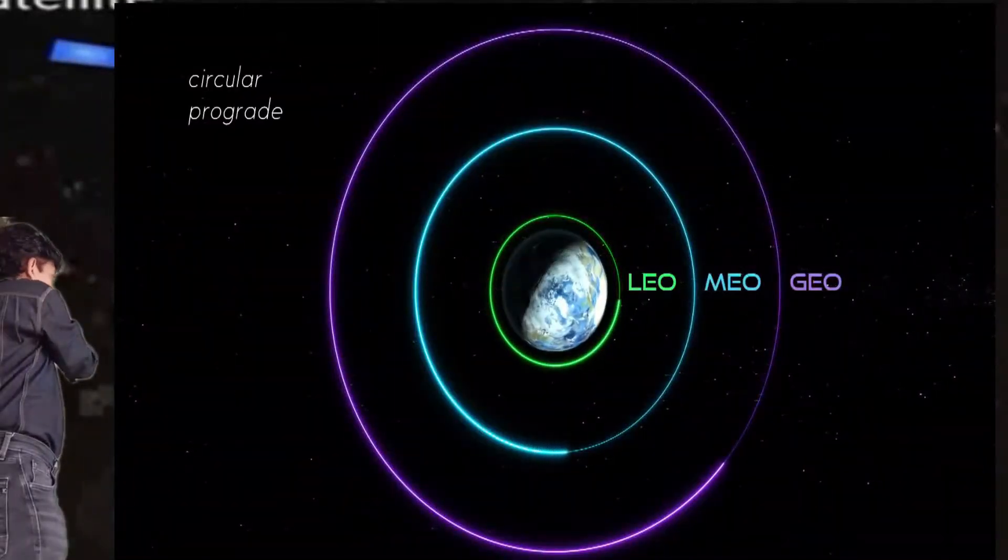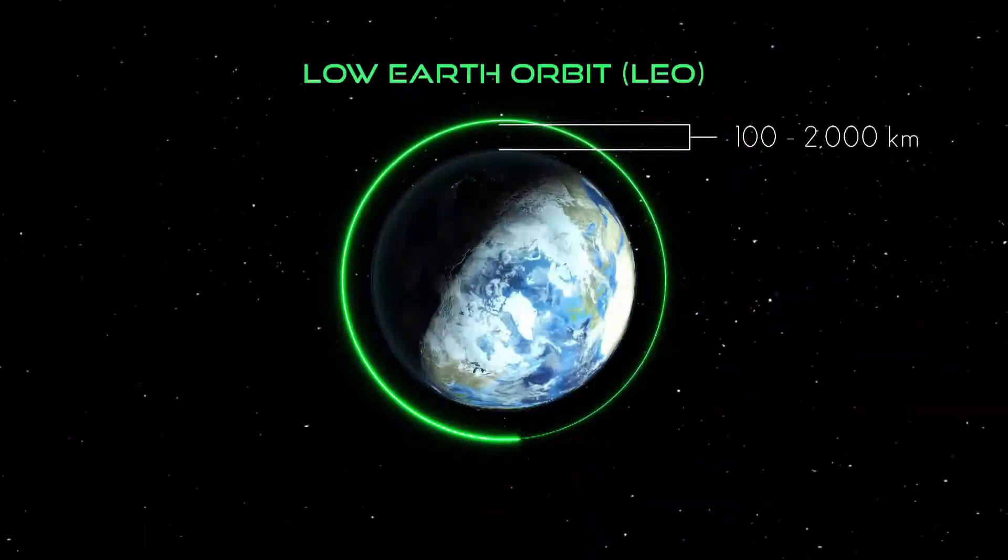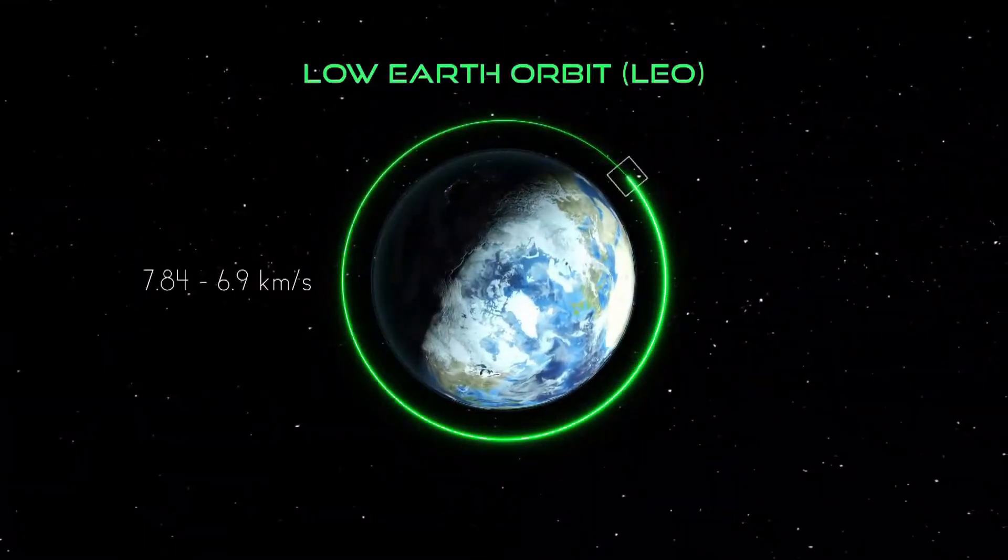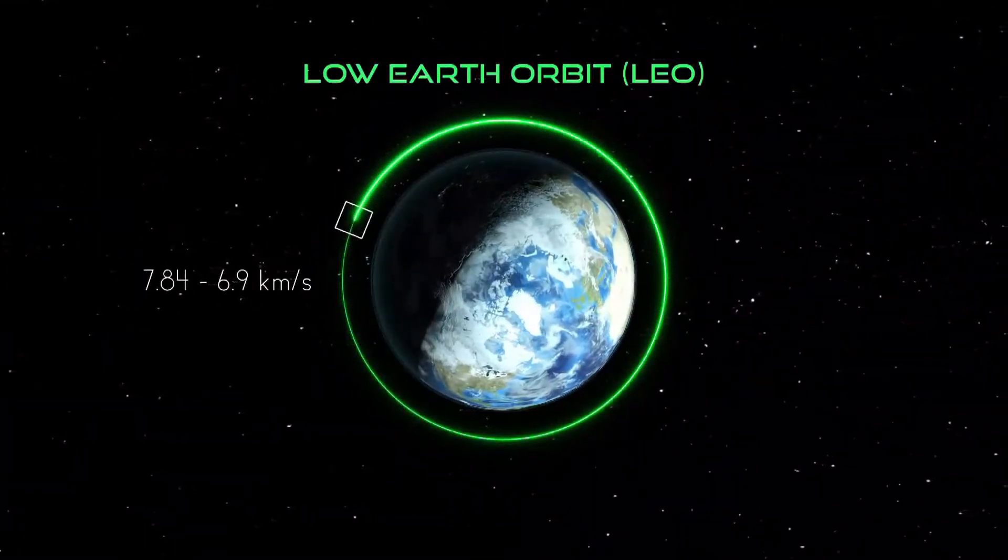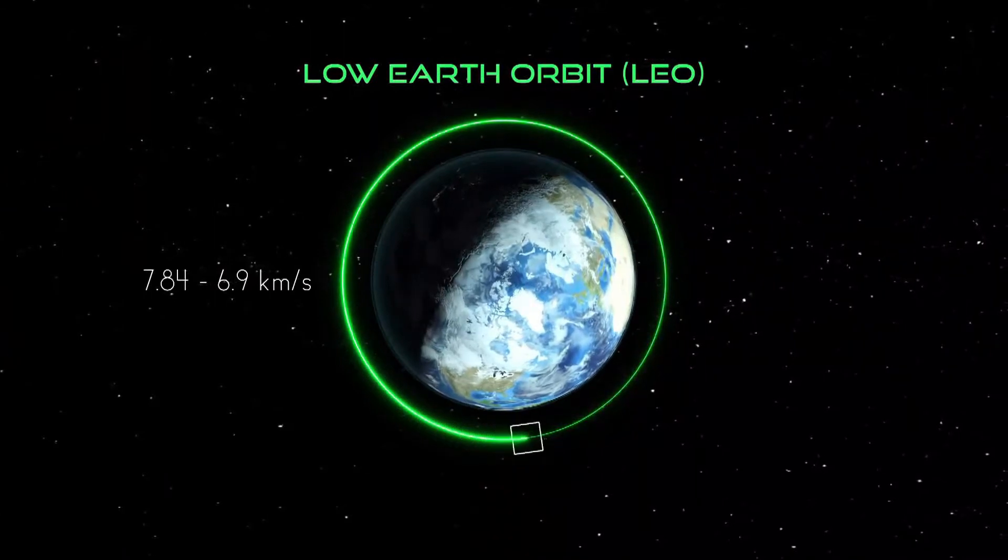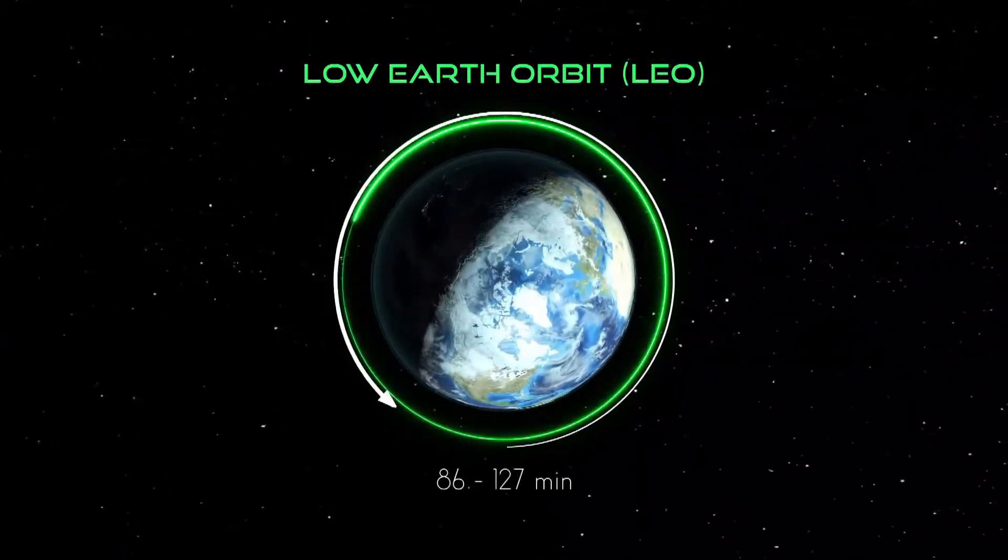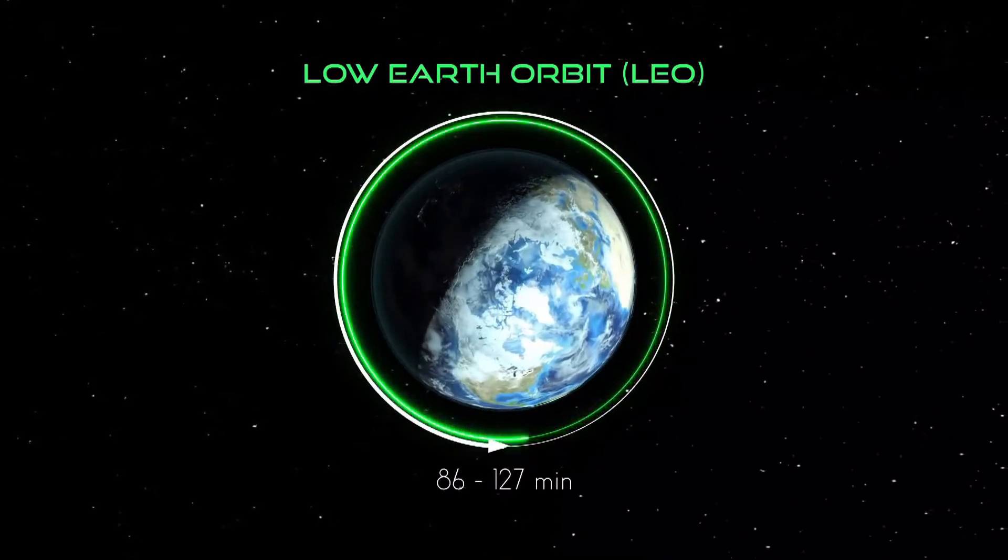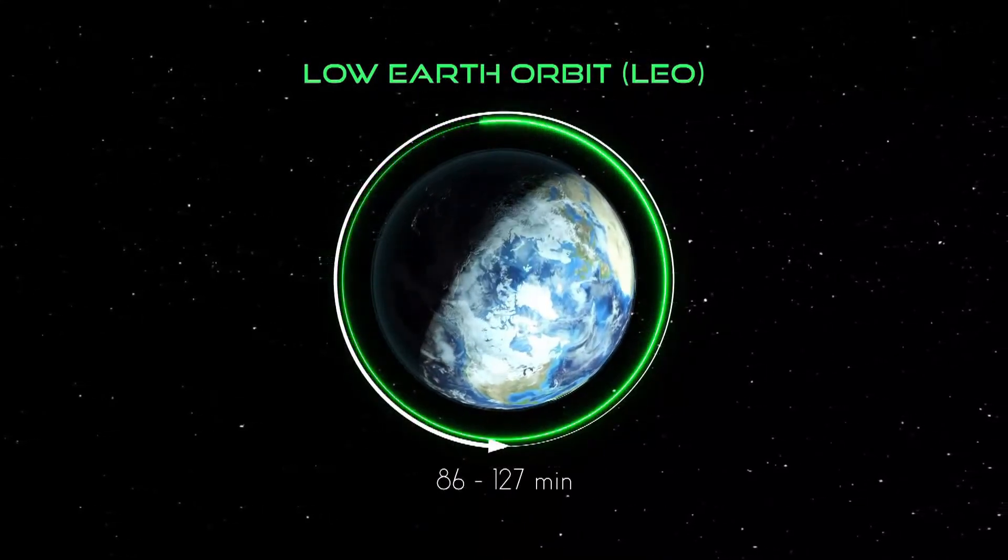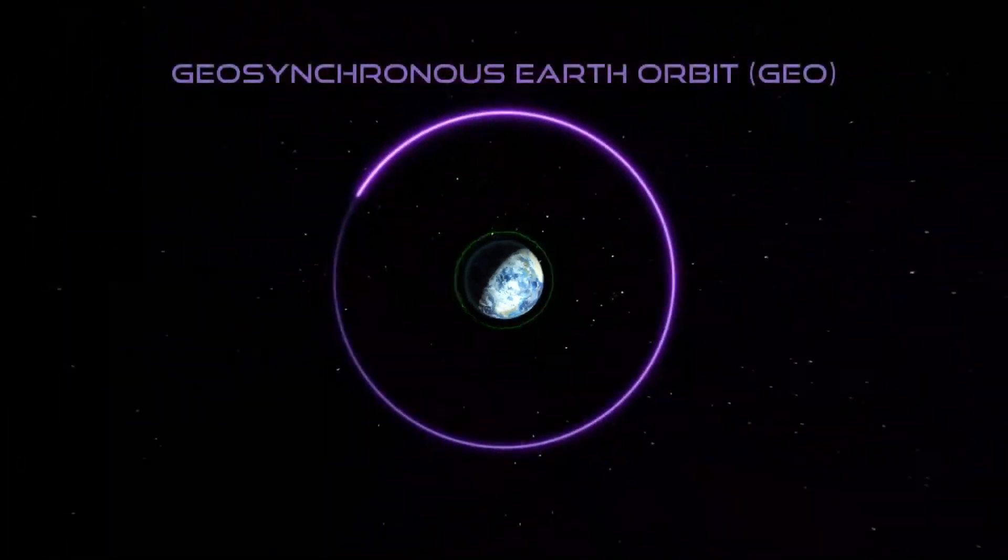Satellites have three different orbital locations: LEO, MEO, and GEO. LEO means Lower Earth Orbit satellites. These are just near the Earth's surface. GPS satellites are of this kind.